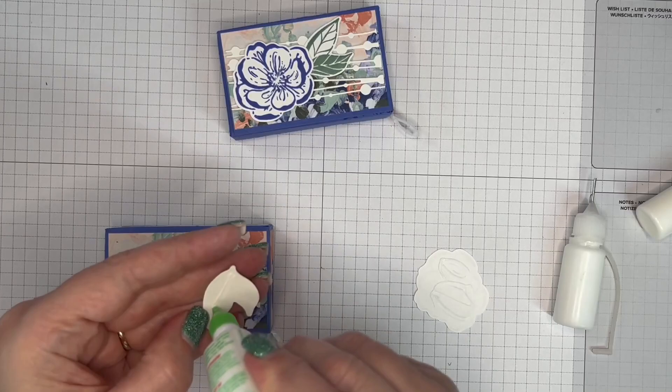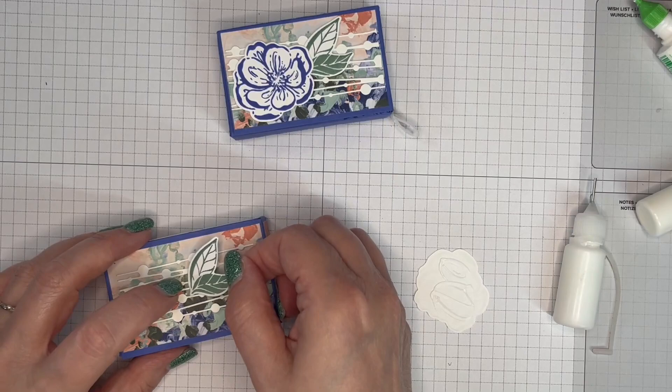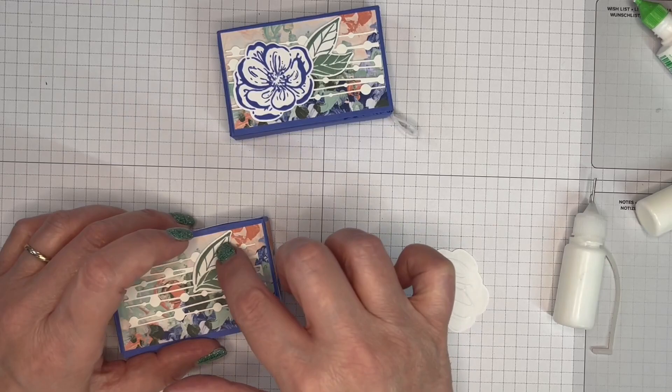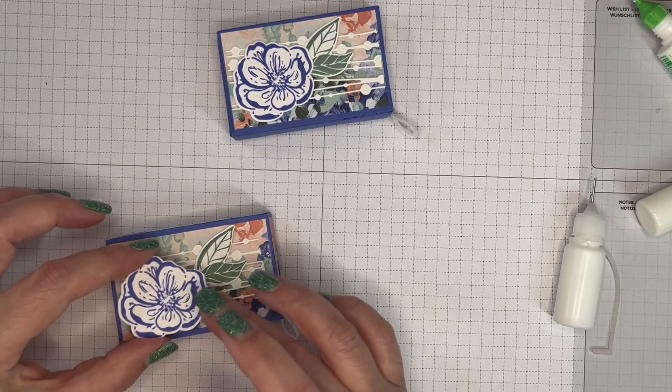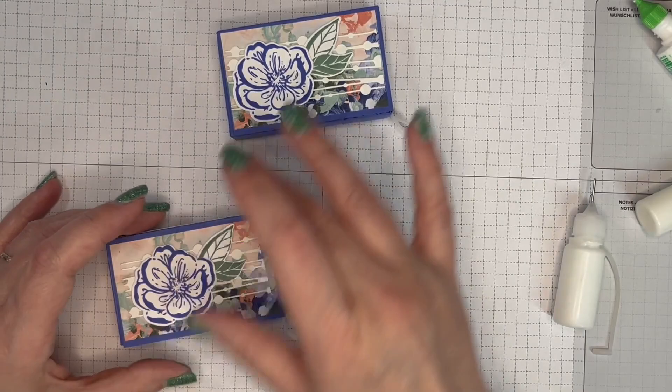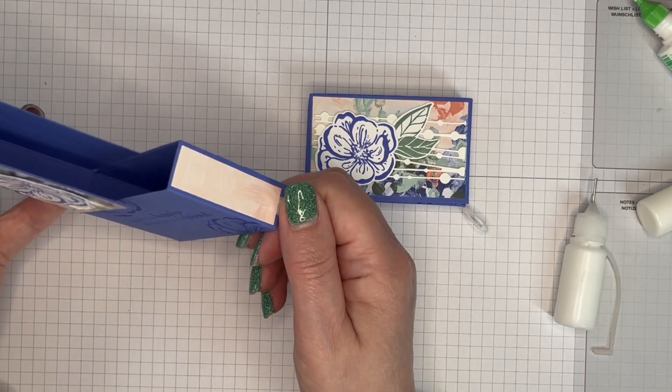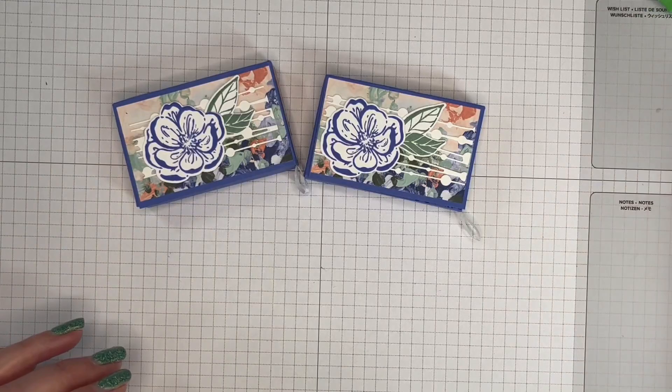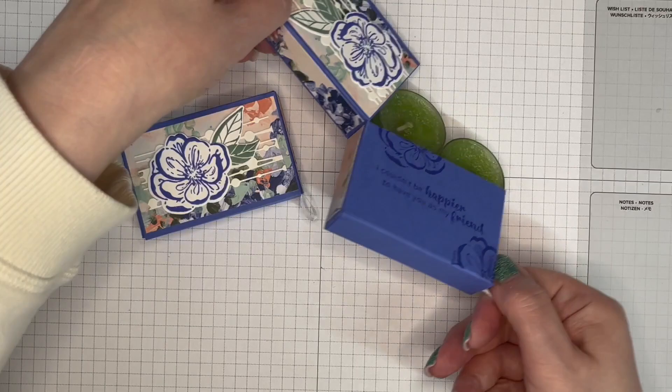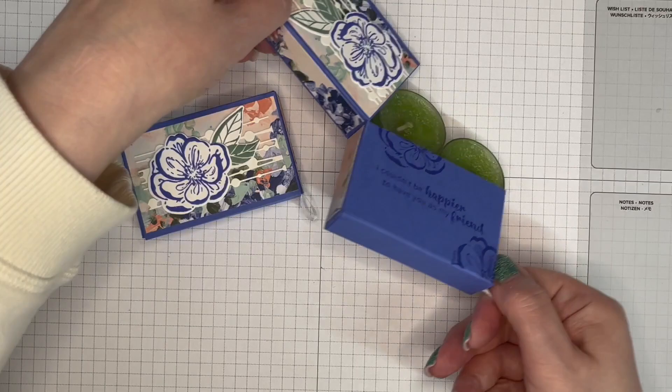I'm gonna pop a leaf on there—that will help those bits stick down—and then my flower on top like so. So there we go, we've got two little boxes with a fun opening and closure, perfect size for two little tea light candles, although I'm sure there's lots of little things that you could put in a box like that.